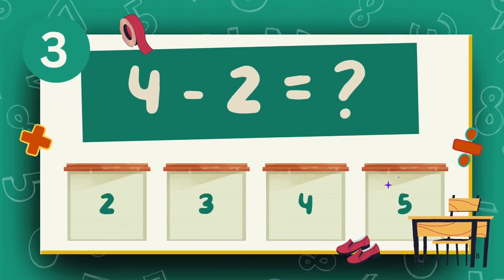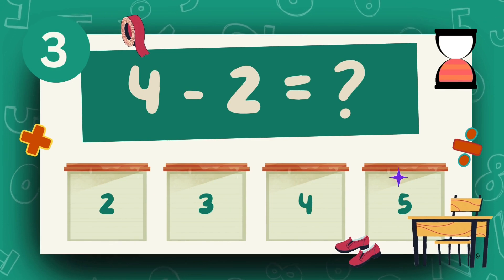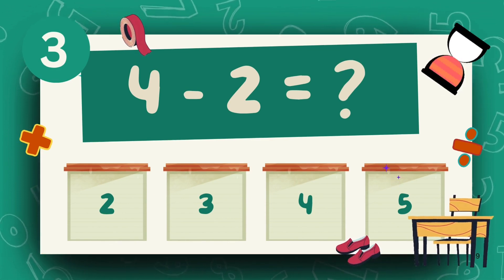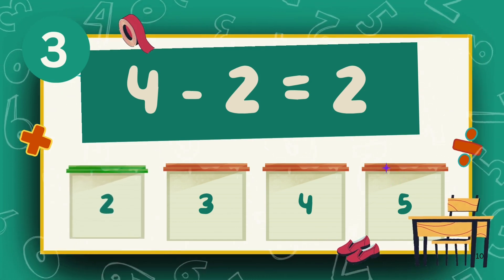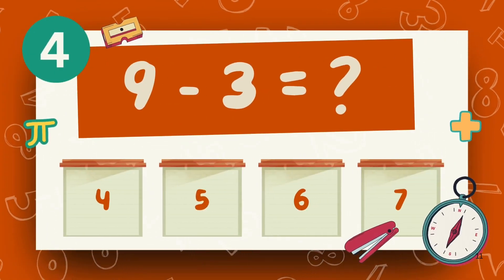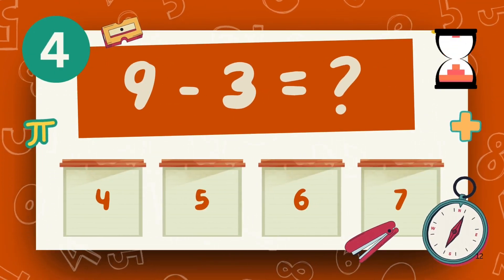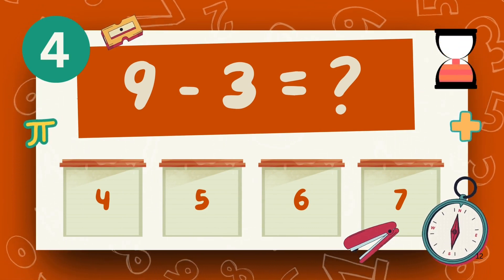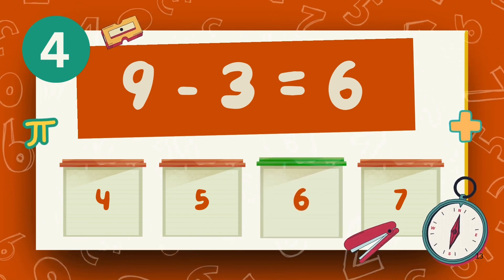What is 4 minus 2? The answer is 2. What is 9 minus 3? The answer is 3.